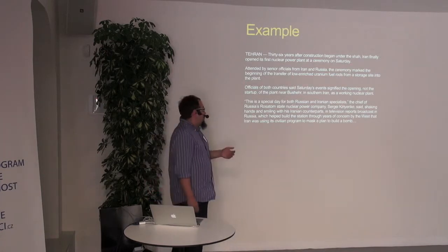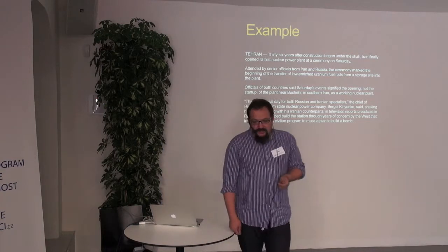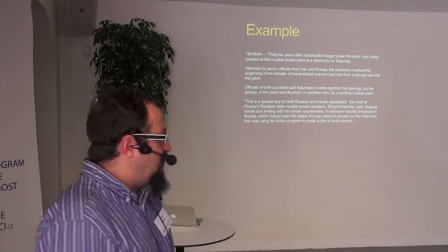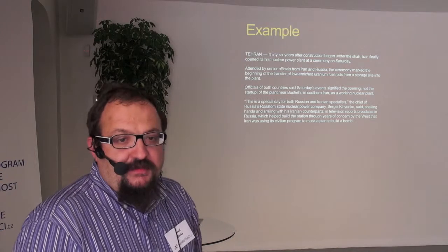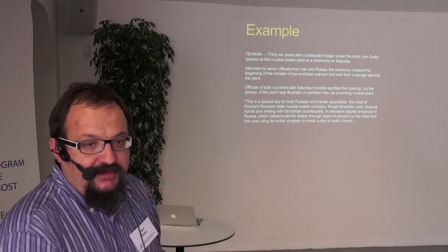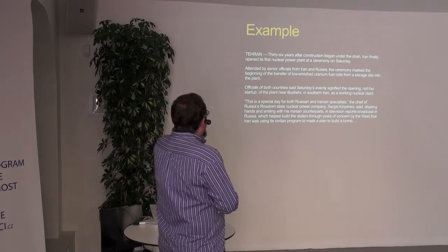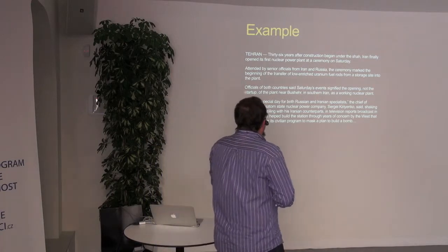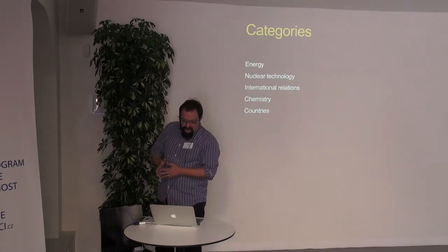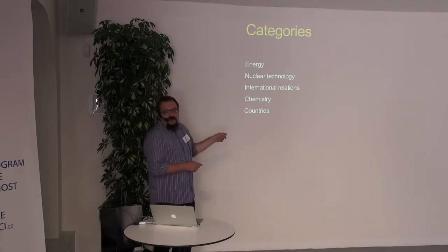The results were good for us. We built this analyzer for English, Polish, Czech, and probably for every language which is possible to extract from Wikipedia. This was a text about Iran, about the opening of a nuclear power plant. In that context, the system was able to find these categories: energy, nuclear technology, international relations, chemistry, and countries.